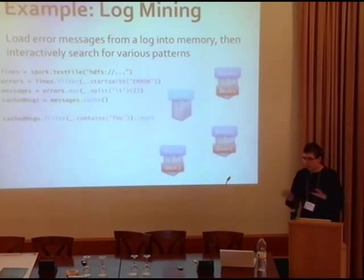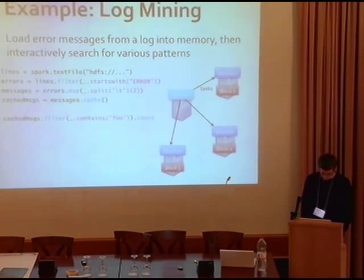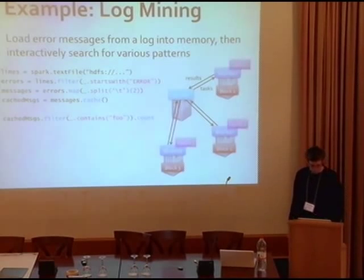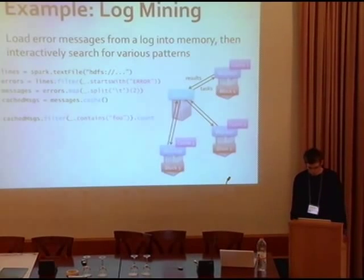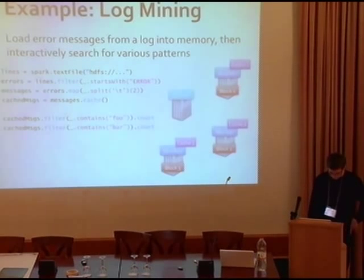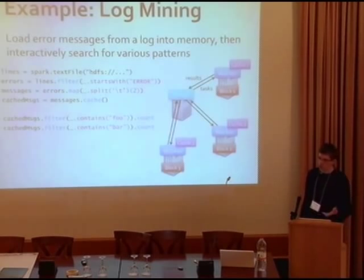Spark looks at where the data is distributed in HDFS, sends tasks to machines to process each block, and saves the cached partitions for later. Next time you do another query — say searching for 'bar' — Spark knows where things are cached, schedules based on cache placement, and returns results much faster.